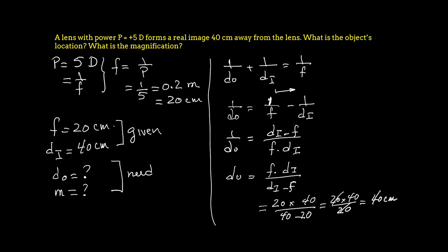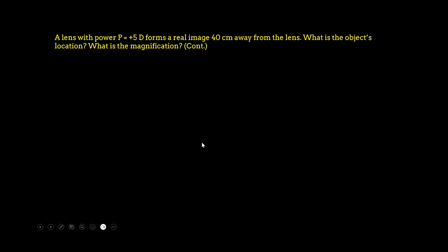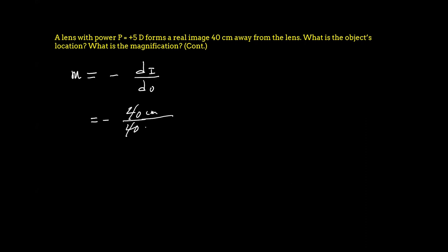So do = (20 × 40) / 20. The 20 cancels, leaving 40 centimeters. Again, I did not carry the units throughout because if f and di are in centimeters, do comes out in centimeters. So do = 40 centimeters. For magnification: m = −di / do = −40 / 40 = −1. The image is the same height as the object but inverted.